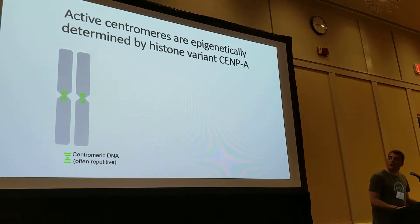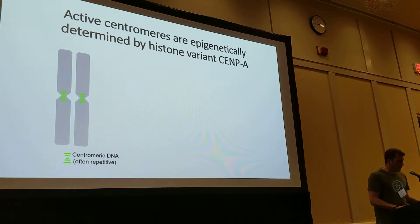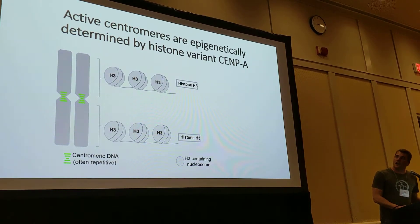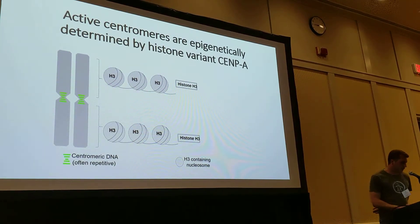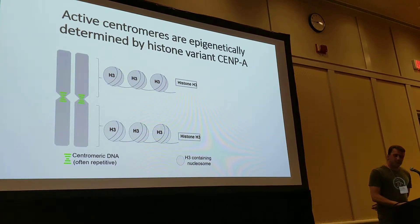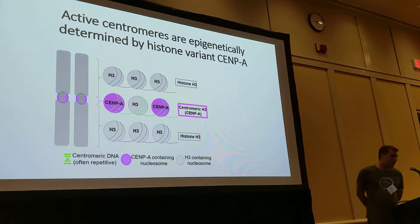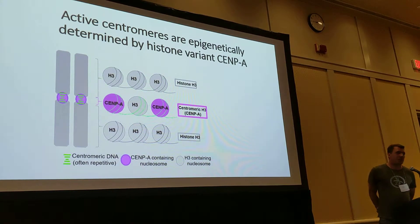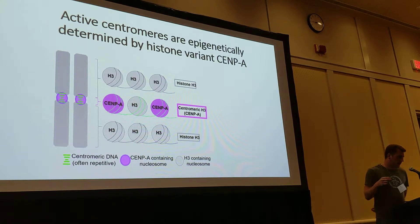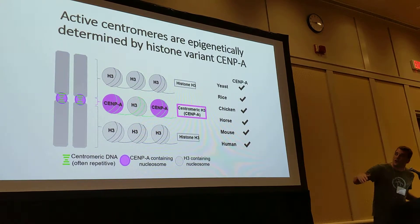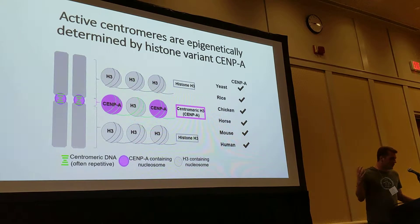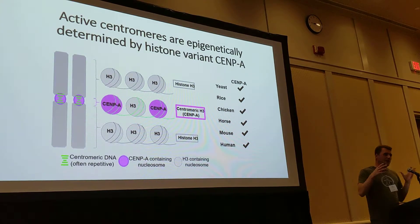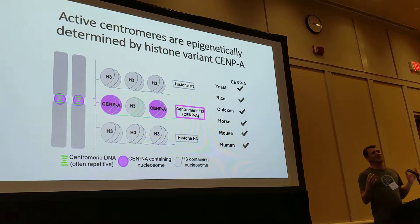Another layer of what a centromere is: centromeres are epigenetically determined, so it's not just based on sequence. In a normal pair of chromosomes, you have histone H3 binding along the DNA. But the centromere has a special modified histone H3 called centromere histone H3, or in animals we call it CENP-A. That CENP-A molecule specifically binds those centromere DNA sequences, and it's conserved across organisms. Wherever centromere histone H3 binds, this is where the kinetochore machinery will become attached via spindle tubules — that actually defines where the centromere is.